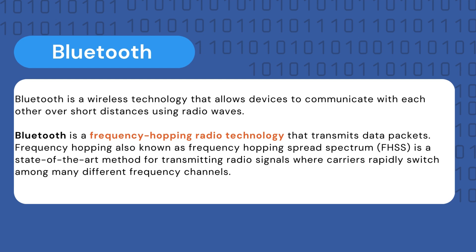Technically, Bluetooth is a frequency hopping radio technology that transmits data packets. Frequency hopping, also known as Frequency Hopping Spread Spectrum or FHSS, is a method for transmitting radio signals where carriers rapidly switch among many different frequency channels. Bluetooth uses this technology within the 2.4 gigahertz band, and these packets conduct data exchanges through one of the designated Bluetooth channels.